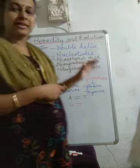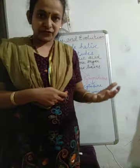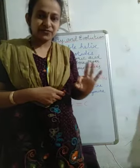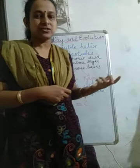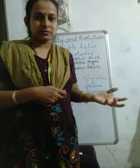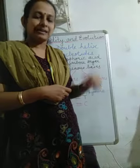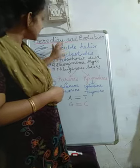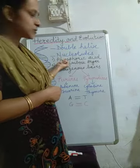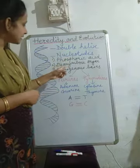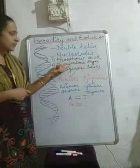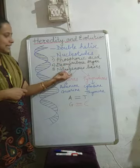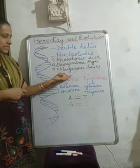What does a nucleotide comprise of? A nucleotide comprises of three different things - this is just revision, as we already studied this last year. Nucleotide comprises of phosphoric acid, then deoxyribose sugar, and nitrogenous bases. Nitrogenous bases are of two types: purines and pyrimidines.